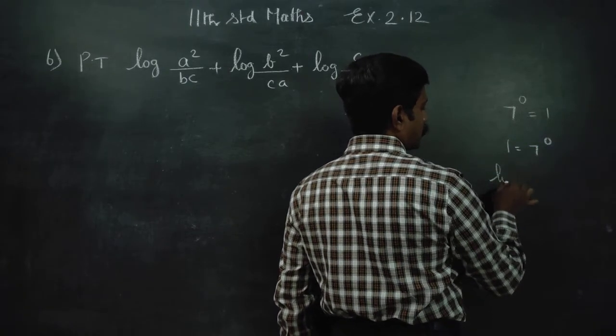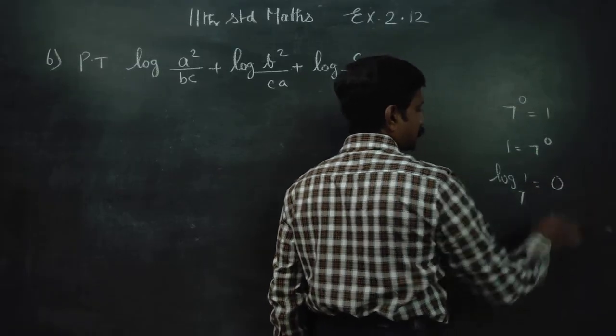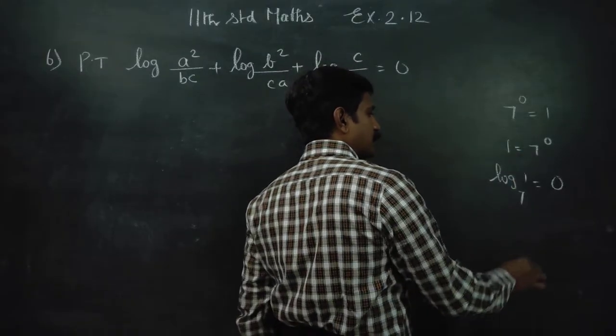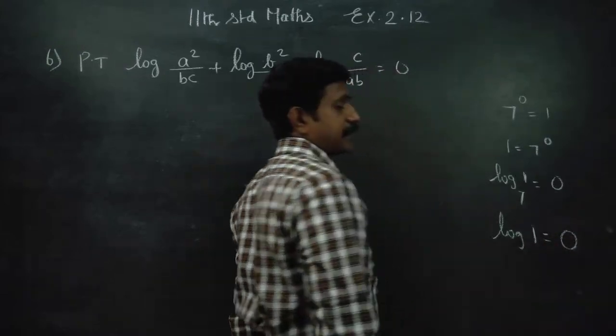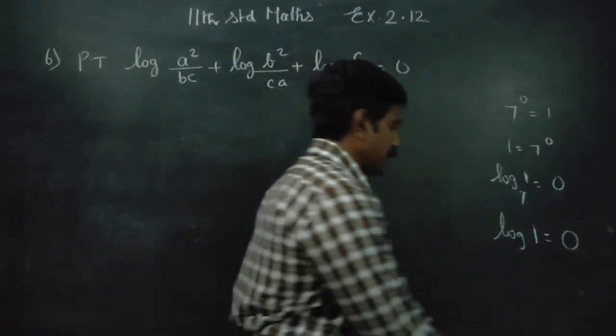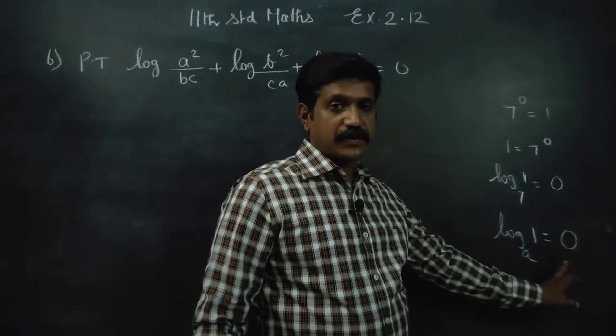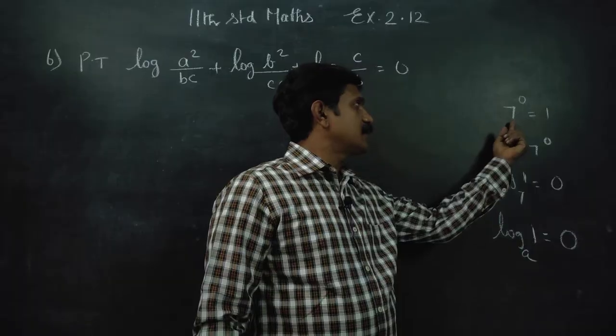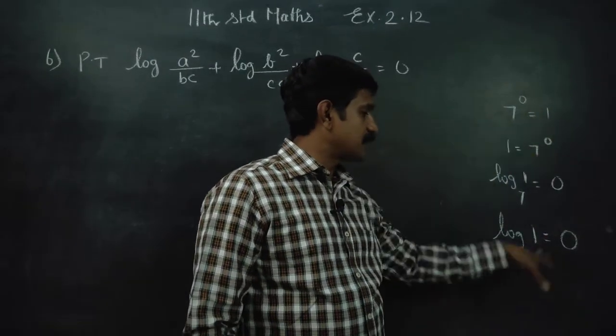I am going to take logarithm. Log 1 base 7 is equal to 0. What is the meaning? Base may be anything, log 1 is equal to 0. Because anything power 0 is 1, log 1 is equal to 0. Exponential is equal to logarithm.